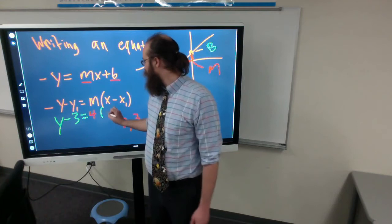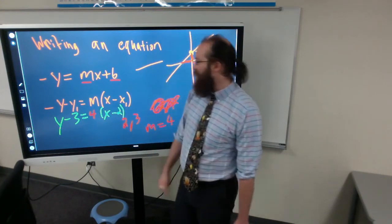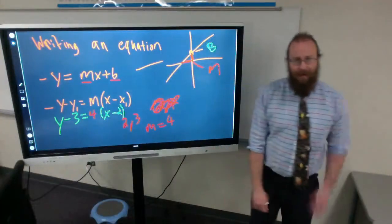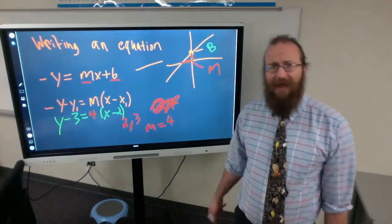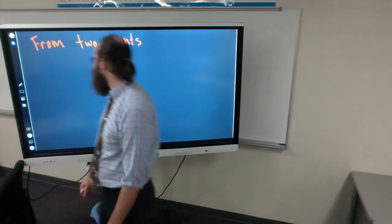Four, which was our slope which was given to us in the equation, times x minus the first x point which was two. So that would be our point slope equation. Point slope equations are easier to write but they're less useful. They require more steps for you to solve them.